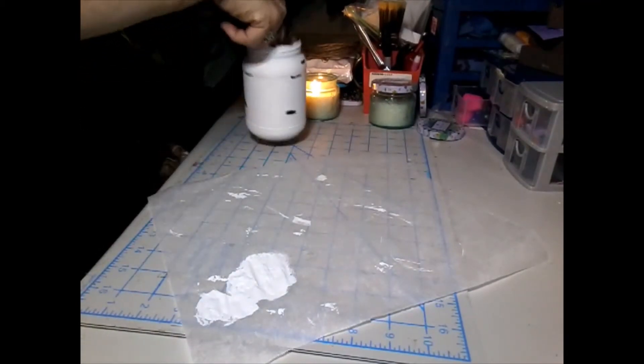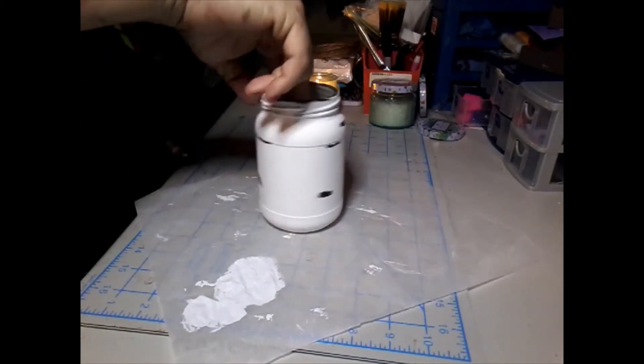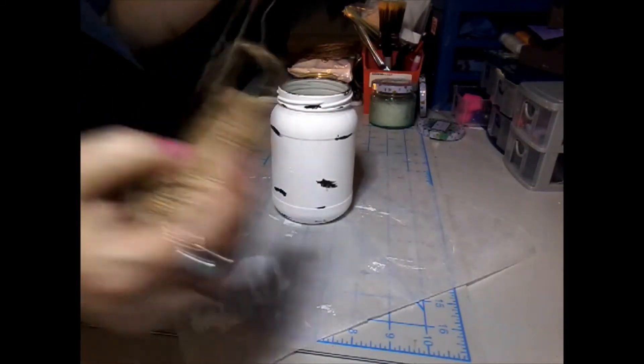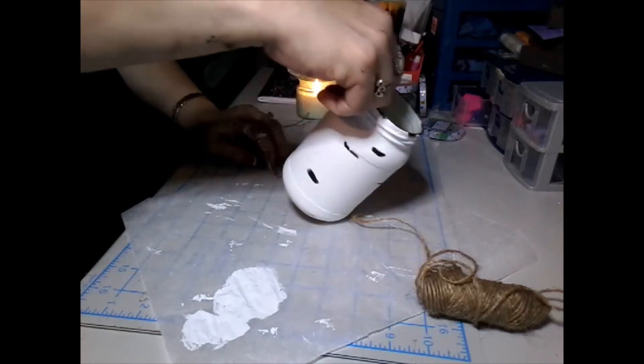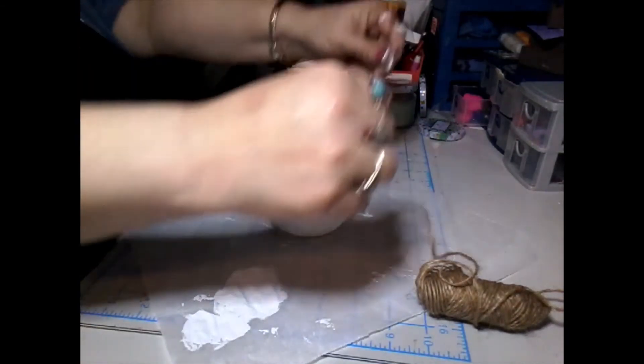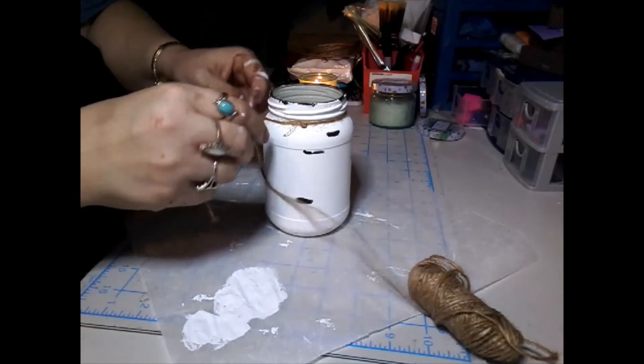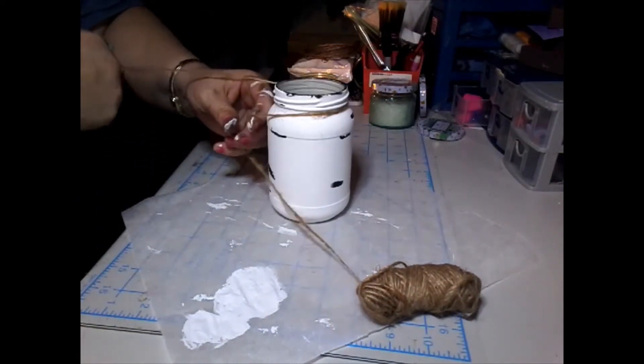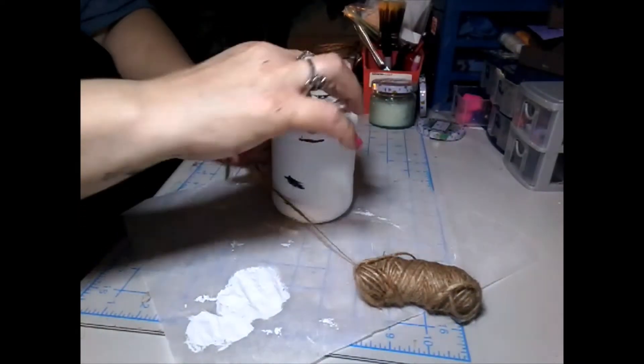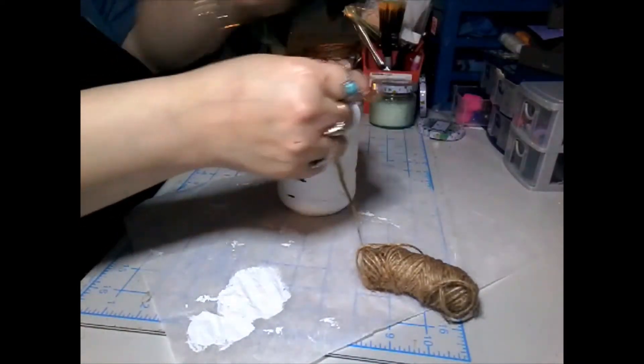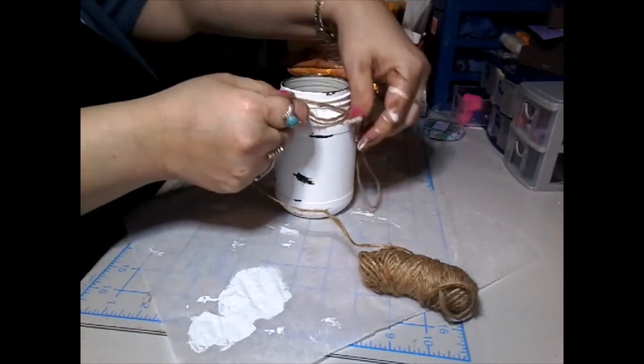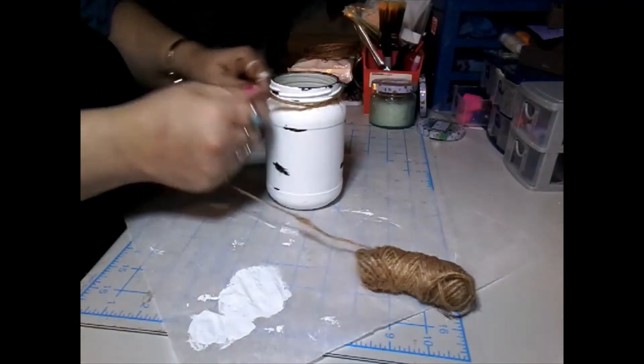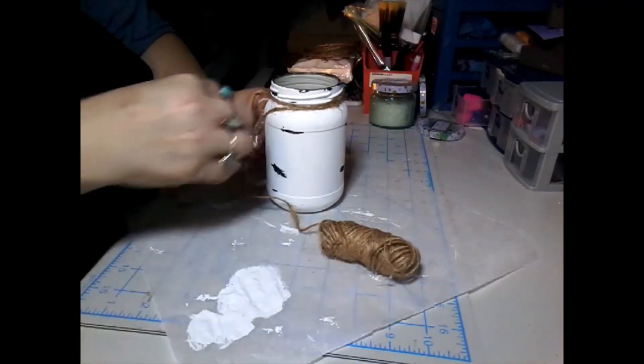Once I get all of that on, I want to take some jute and wrap around the top. I'm going to double this up along the top just to give it a little extra decor. I'm going to loop it towards the front.